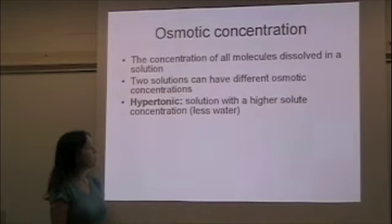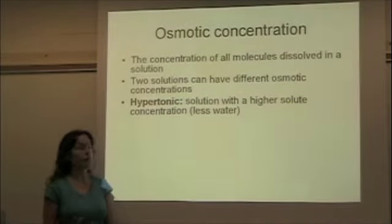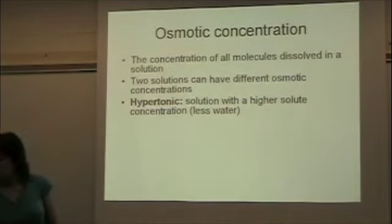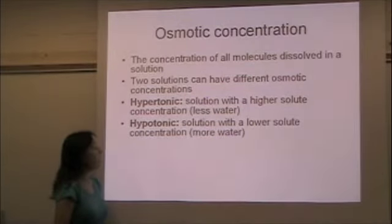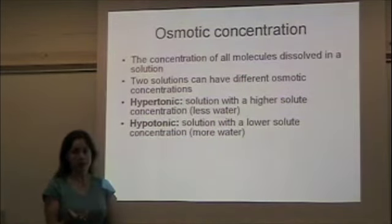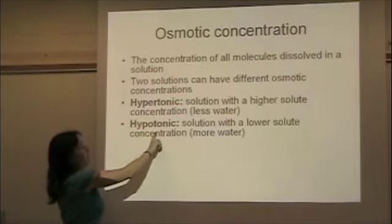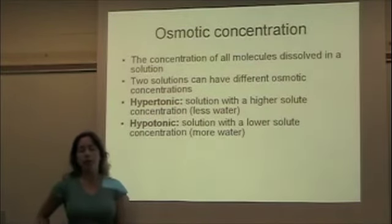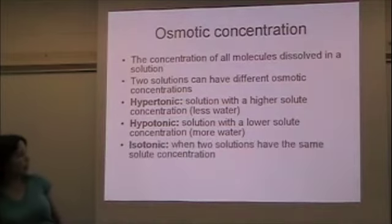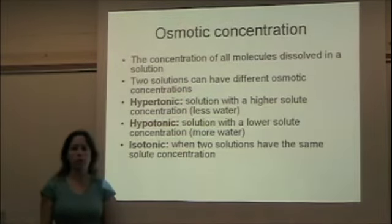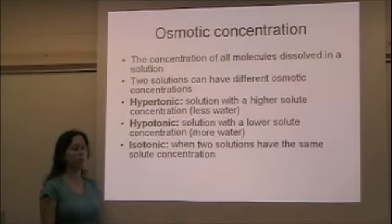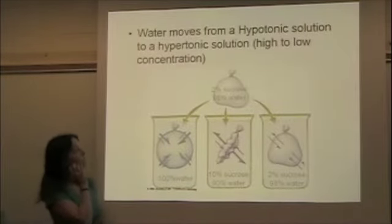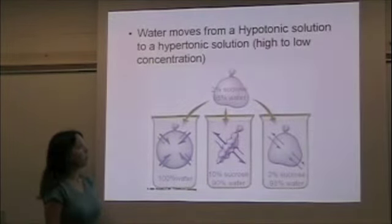There are some terms we need to know. Hypertonic is the solution that has more solutes and less water. The opposite is hypotonic — hypotonic has more water and less solutes. So water goes from a hypotonic area with more water to a hypertonic area with less water. If there's an equal amount of water in two areas, we say that is isotonic — two solutions with identical concentrations of solutes and identical concentrations of water. Water moves from hypotonic to hypertonic.